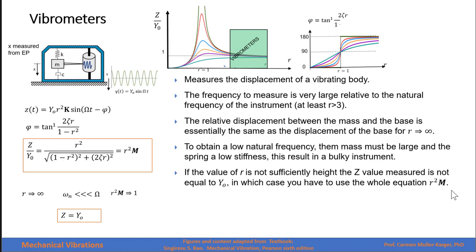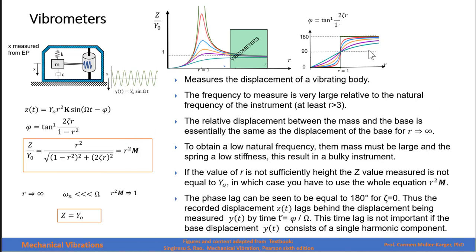If the value of r is not sufficiently high — meaning the frequency is not much higher than the natural frequency — we have to use the full equation to calculate the amplitude factor and cannot assume it equals one. Since we are working at frequency ratios above one, the phase angle is 180 degrees for zeta equals zero, but greater than 90 degrees for any other zeta. The recorded displacement lags behind the displacement being measured by this phase angle, corresponding to a time lag equal to the phase angle divided by the frequency. This lag is not important if the displacement consists of a single harmonic, because we can calculate this angle.